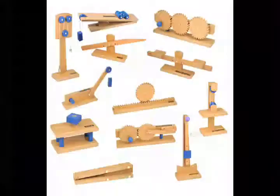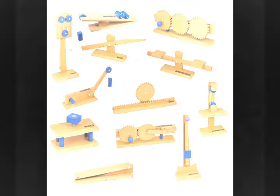A simple machine is a device that makes work easier by magnifying or changing the direction of a force. Types include: lever, wheel, wedge, pulley, inclined plane, and screw.